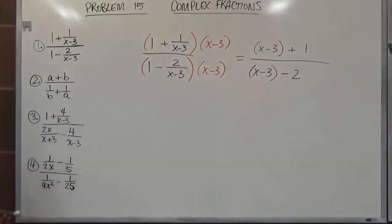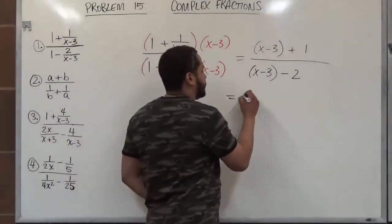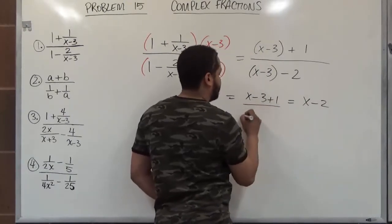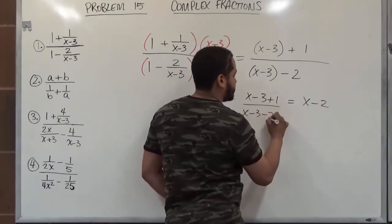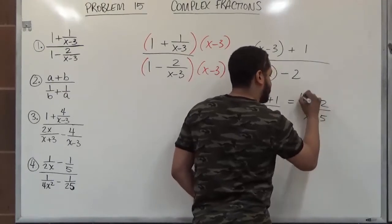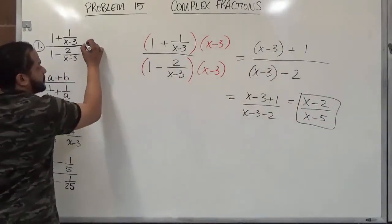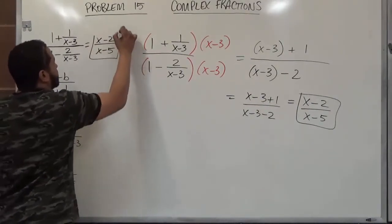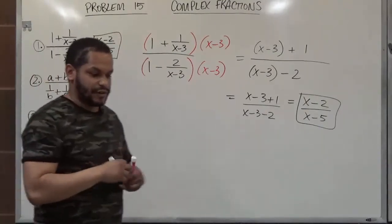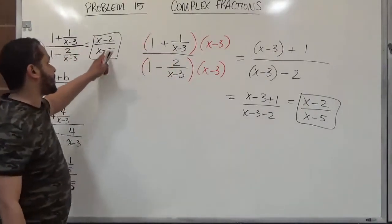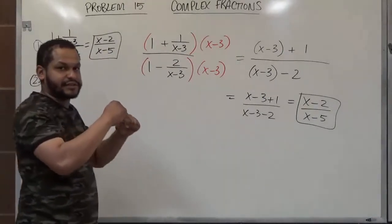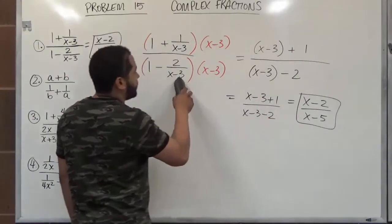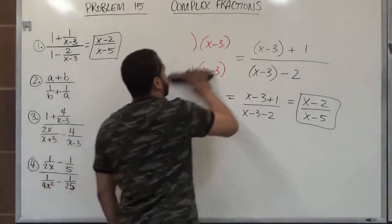Now our task is to simply simplify what's left. In the numerator we have x minus 3 plus 1, which becomes x minus 2. In the denominator we have x minus 3 minus 2, which becomes x minus 5. That's our solution for the first problem: x minus 2 over x minus 5. What we're really doing is simplifying the fraction and getting rid of all the complex fractions — we want a fraction without fractions inside of it.